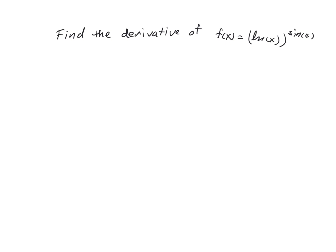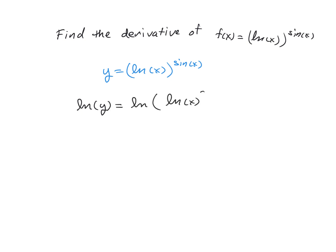So the idea, once again, is to use logarithmic differentiation, and in doing so, we're going to set y equal to the function that we're studying, which is the natural log of x raised to the sine of x power. So we're now going to take the natural log of both sides. So we have the natural log of y equaling the natural log of the natural log of x raised to the sine of x power.